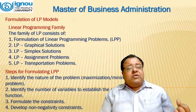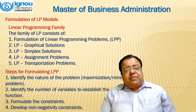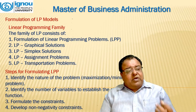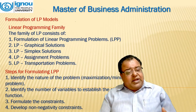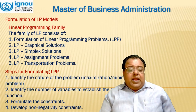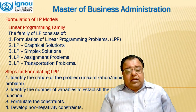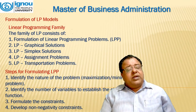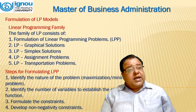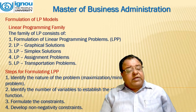The linear programming family includes: formulation of linear programming problems (LPP), linear programming graphical solutions, simplex solutions, assignment problems, and transportation problems. The steps for formulating an LPP are: first, identify whether it is a maximization or minimization problem; second, identify the number of variables to establish the objective function; third, formulate the constraints; and fourth, develop non-negativity constraints.